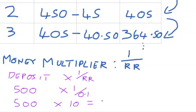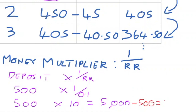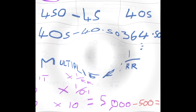So the formula becomes: €500 multiplied by 1 over 0.1, which is 10. This means the total money created in the economy is €5,000. However, we have to take into account the initial deposit of €500, because that stays in the banking system. So we subtract the initial deposit of €500 to give us the amount of new money that can potentially be created, which is €5,000 minus €500 — giving us €4,500.